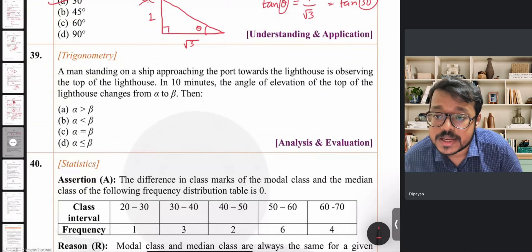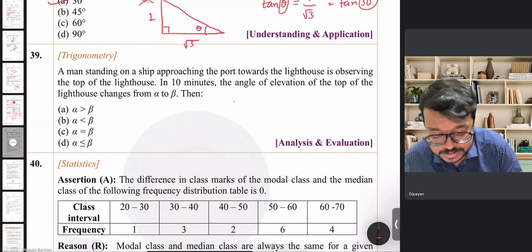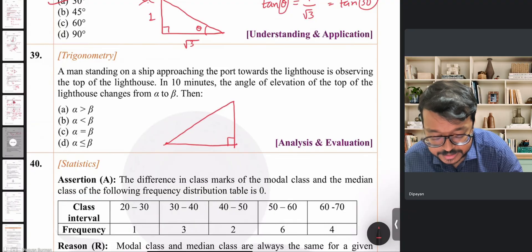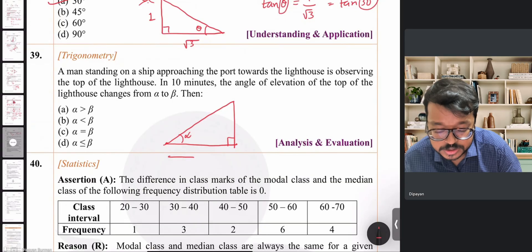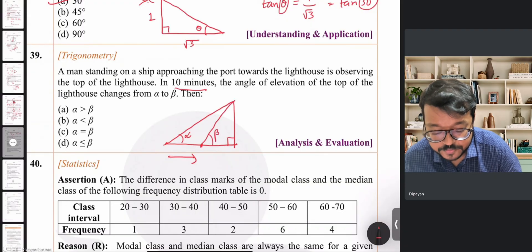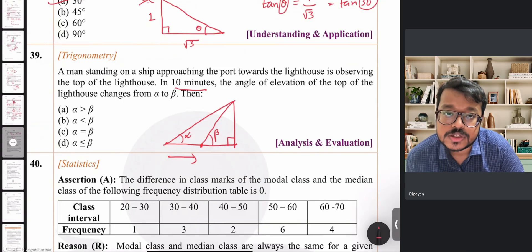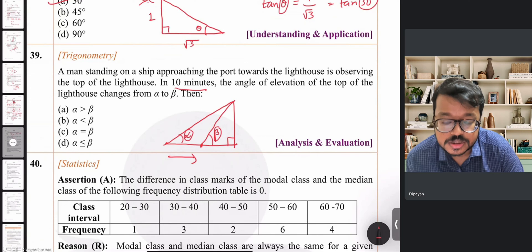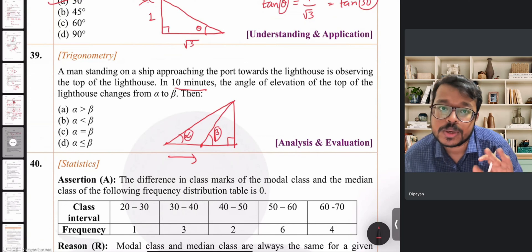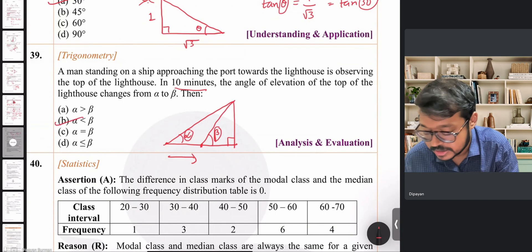Question 39: A man on a ship approaching a lighthouse observes its top. Initially the angle of elevation is α; after 10 minutes it becomes β. As the ship gets closer, the angle of elevation increases, so β > α, meaning α < β. Option B is correct.